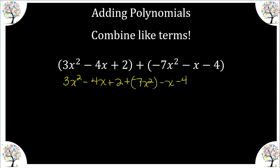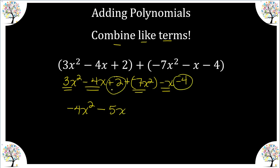Now we are simply going to combine like terms. We have the two quadratic terms: three and a negative seven gives negative four, and it's a quadratic term. Then we have our linear terms, that gives us minus five x, and then we have our constants. Always consider the operation in front of the term — we have a positive two and a minus four, so that gives us negative two. So here we have a quadratic trinomial.